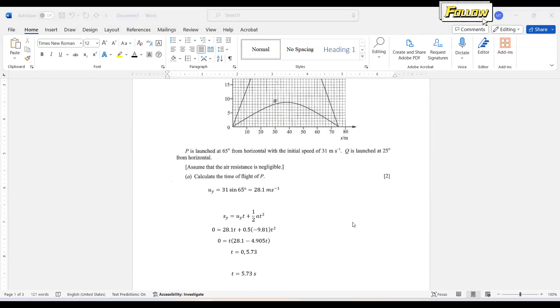So actually there is another simpler method that we can use which is we can solve it also in the horizontal component. So we can get also the horizontal speed as 31 cos 65 which is 13.1 meters per second. Since we have the horizontal distance, we can also apply s equals vt. We have 75 equal to 13.1t and we shall get also the same answer 5.73 seconds.